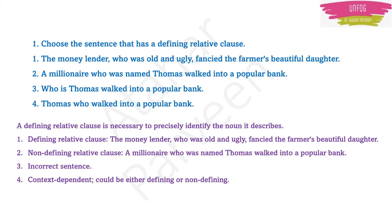A defining relative clause is needed to properly identify the noun which it describes. Here in option 1, the sentence is: 'The money lender, who was old and ugly, fancied the farmer's beautiful daughter.' This is a defining relative clause — the money lender is being described, and the farmer's daughter is also being described as beautiful. In sentences where you are precisely identifying the noun it describes, they are known as defining relative clauses.